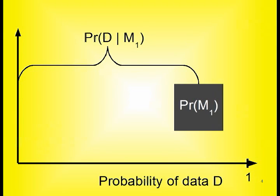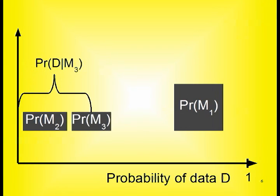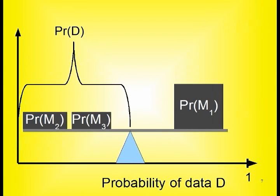For each model, place along the x-axis an imaginary weight equal to the model probability at a distance equal to the likelihood. Since we've got a weighted sum, the total data probability is the point of equilibrium along the x-axis.